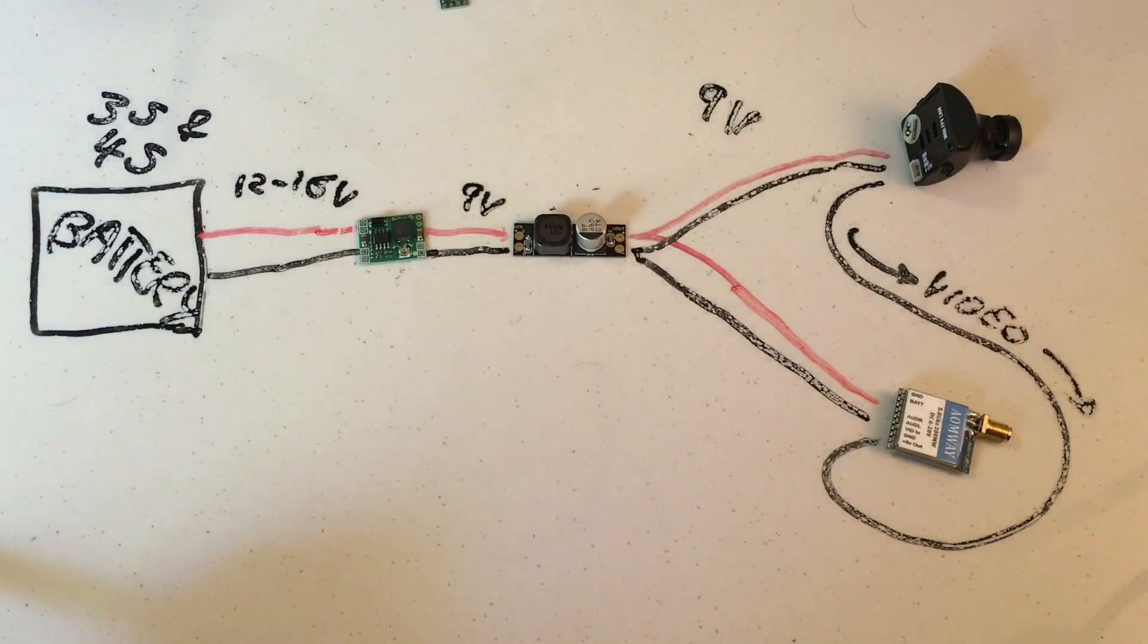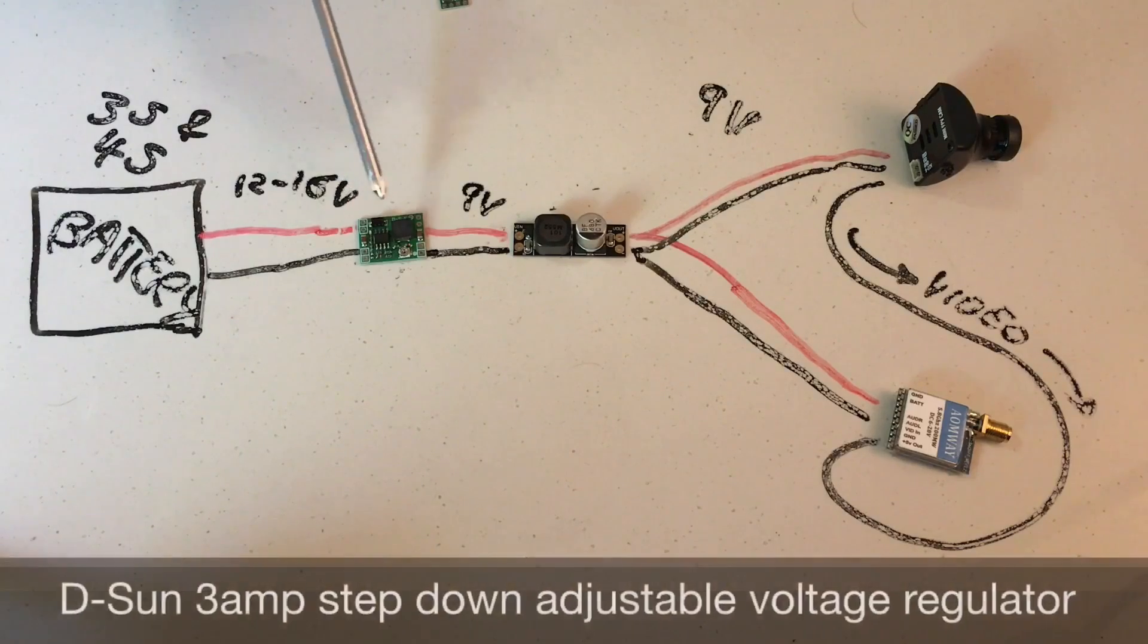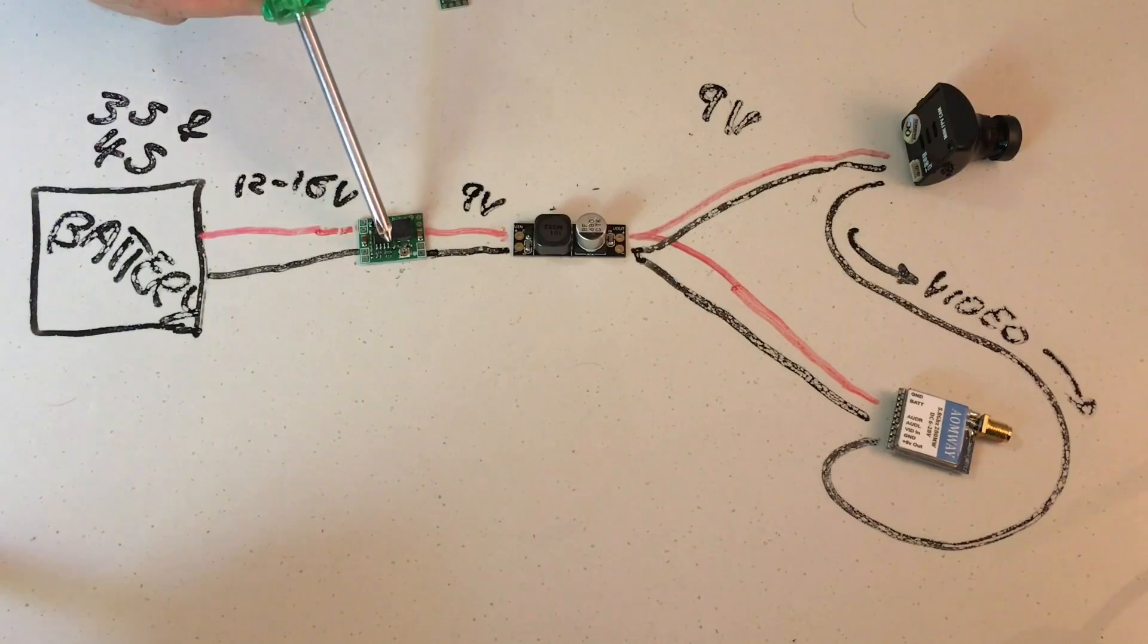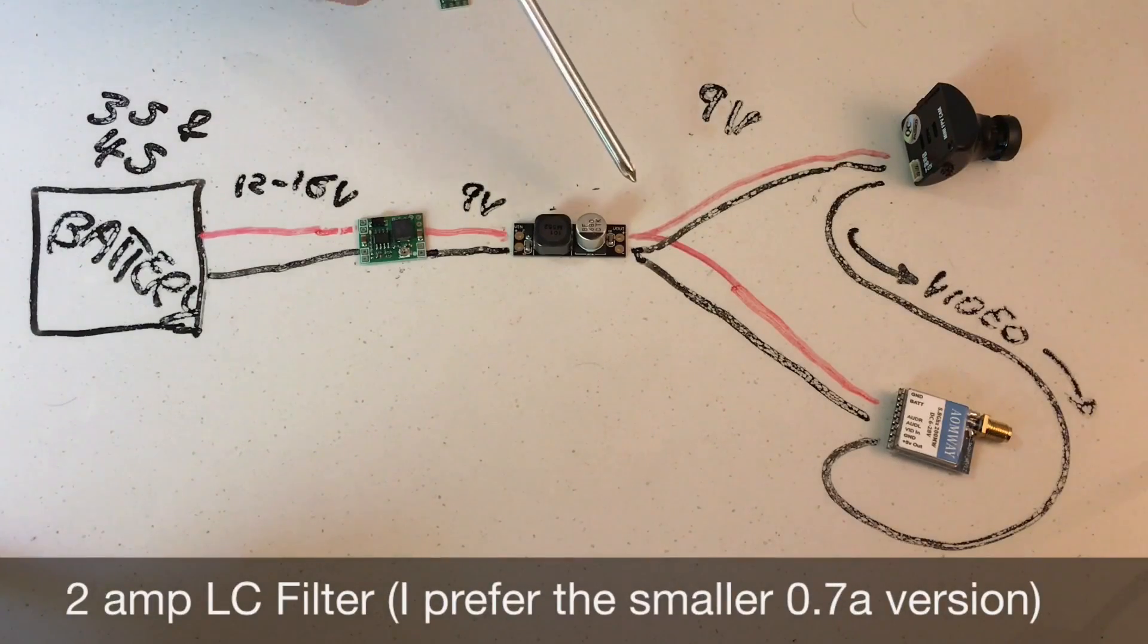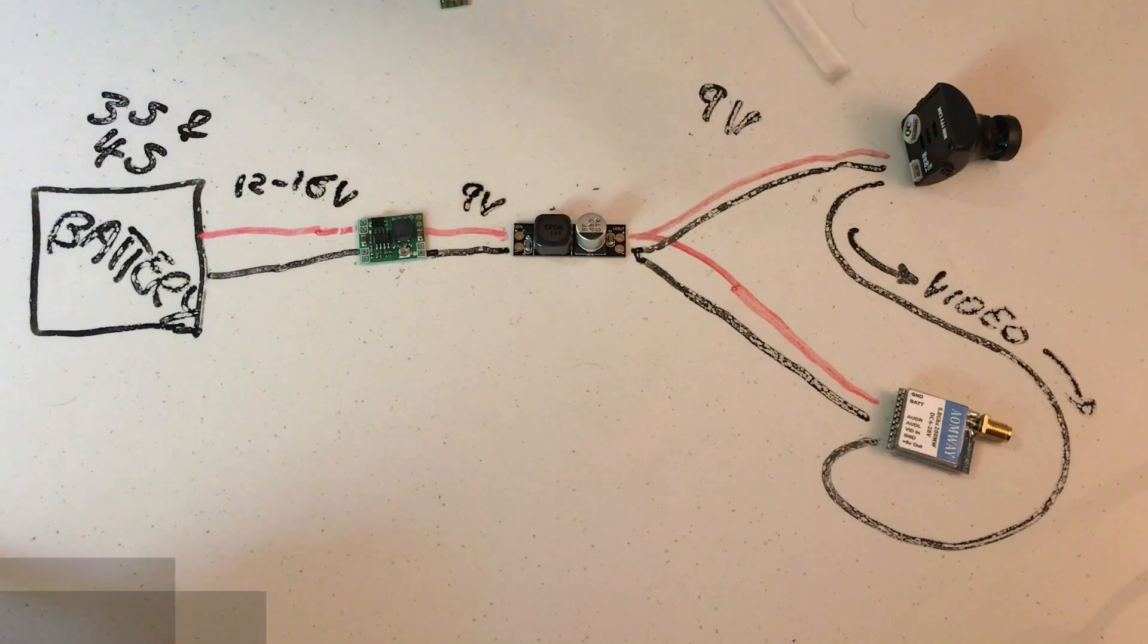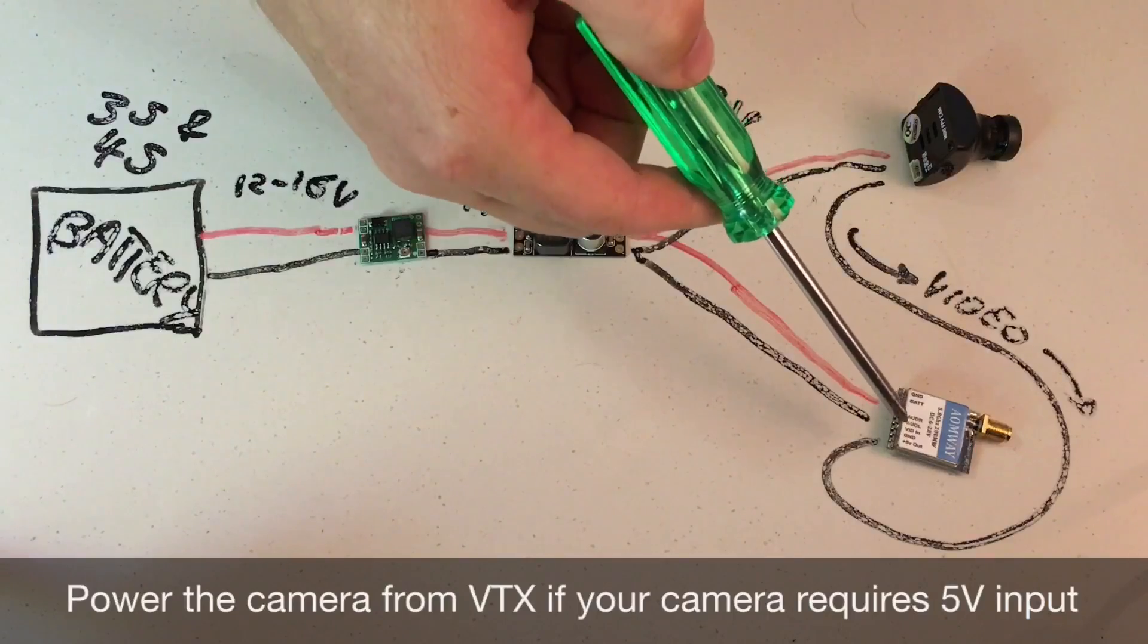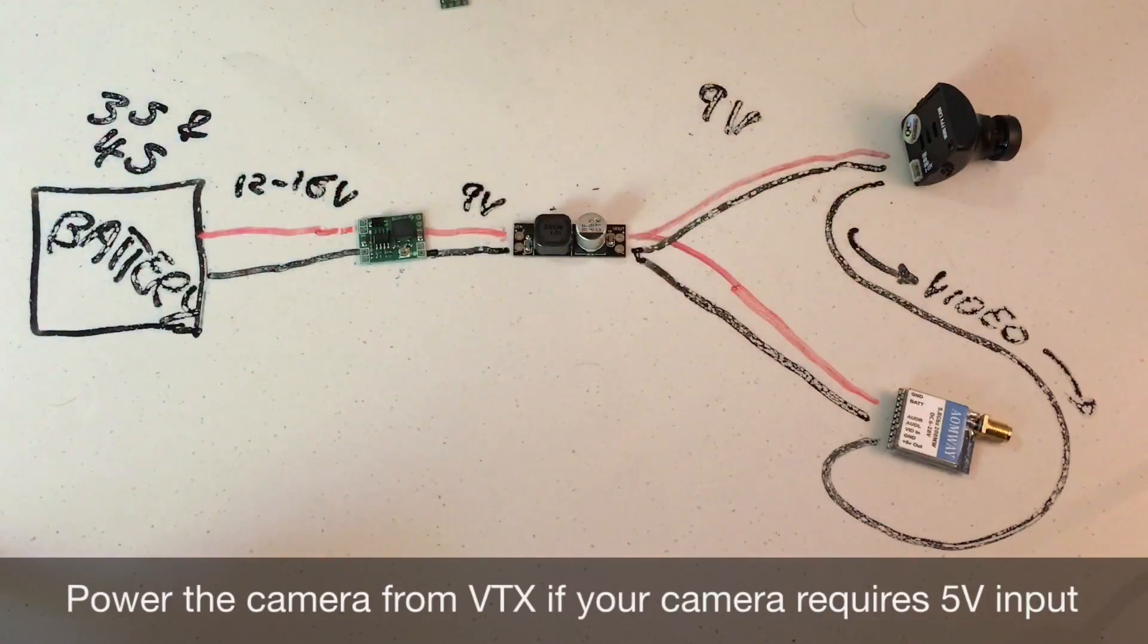For a combination 3S and 4S battery setup where you want to be able to use either, your output voltage from the battery will be 12 to 16 volts. So it's best to run one of these DSUN adjustable step-down voltage regulators, which we can adjust to have a constant 9V output going into the LC filter, then 9V out of the LC filter into the camera and VTX, with the video output from camera to video transmitter input represented by this line.